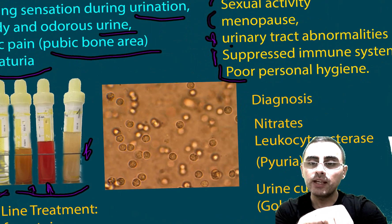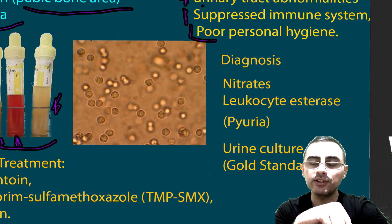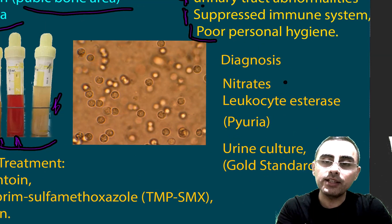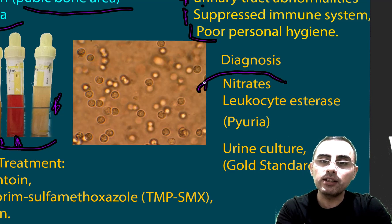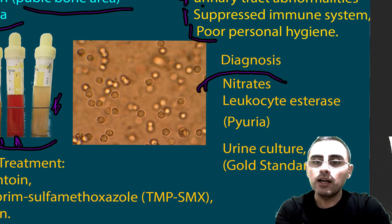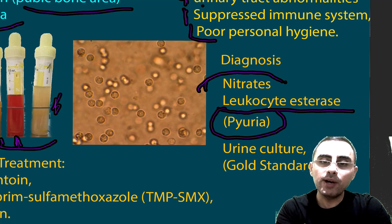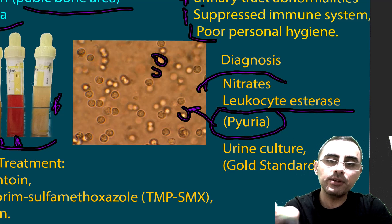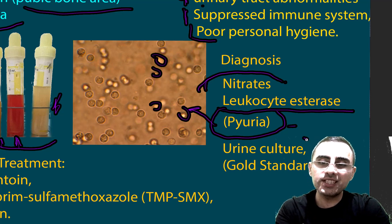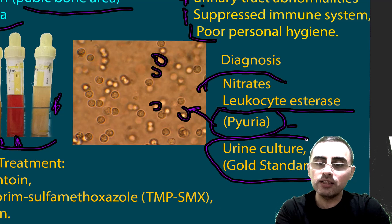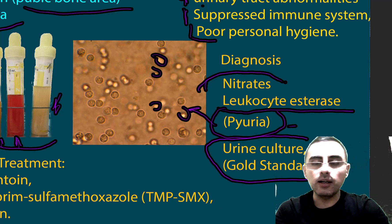For diagnosis, nitrates in the urine indicate bacterial infection. Leukocyte esterase indicates pyuria — white blood cells in the urine — which is also characteristic of cystitis. The gold standard of diagnosis is urine culture.